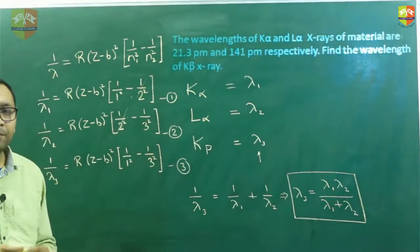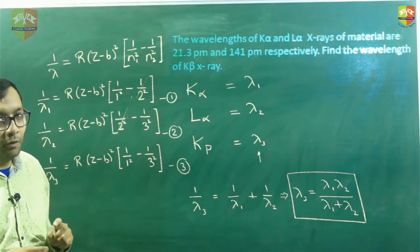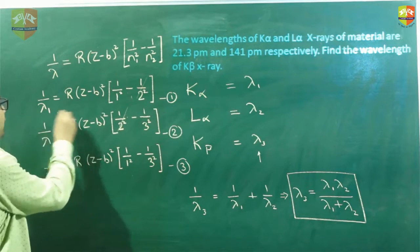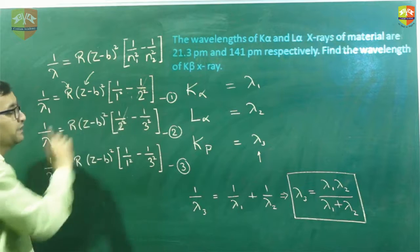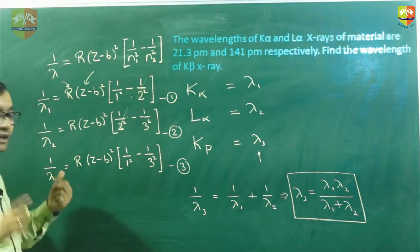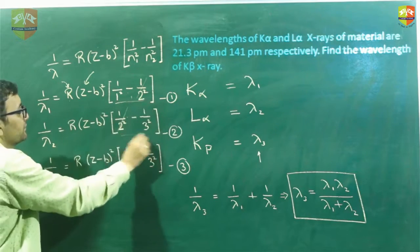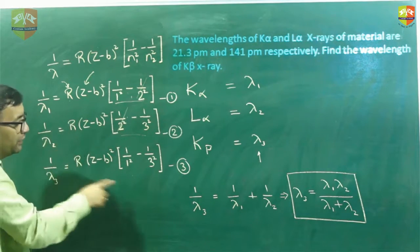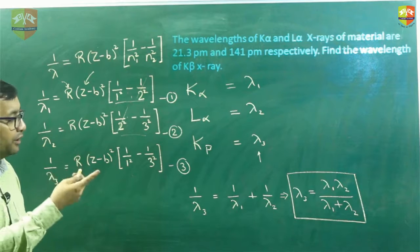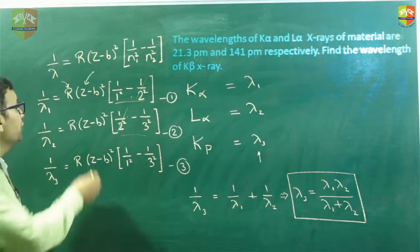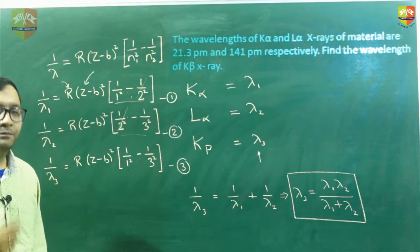This gives us lambda 3 as lambda 1 times lambda 2 divided by lambda 1 plus lambda 2. The important lesson from this problem is that you do not need to substitute the value of the Rydberg constant and calculate the right-hand side numerically. First, express what is asked in terms of variables. If you look closely, you get a very nice expression directly between the lambdas, so you can directly get lambda 3 as lambda 1 times lambda 2 divided by lambda 1 plus lambda 2.